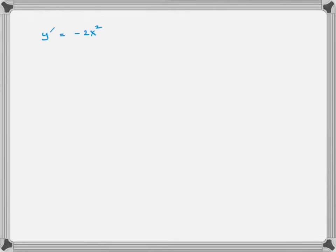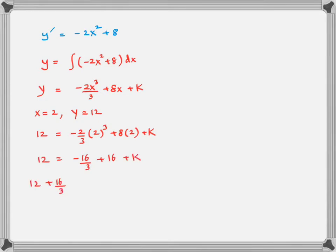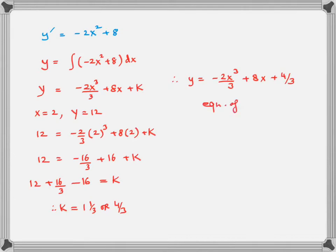So this is the equation for the first derivative. Integrate it again to get y in terms of x, giving a new constant of integration k. To evaluate k, plug in x equals 2 and y equals 12 using the calculator. Simplify to find k, which comes out to be 1 and 1 third, or 4 thirds. Hence this is the equation of the curve — done in two steps.